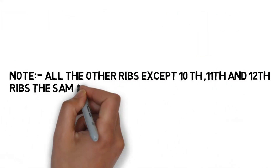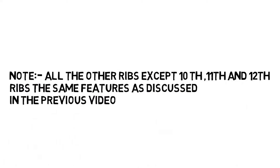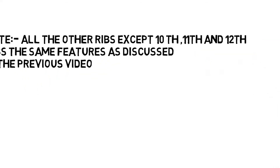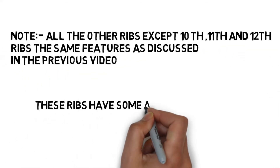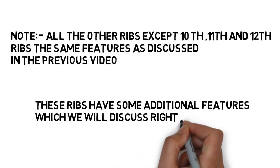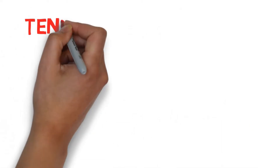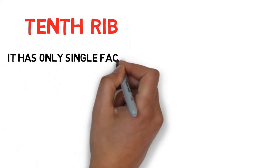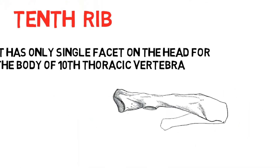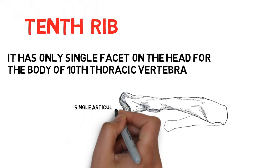All ribs except the 10th, 11th, and 12th have the same features as discussed in the previous video — link in the description. These ribs have some additional features. The 10th rib has only a single facet on the head for the body of the 10th thoracic vertebra. Here is the 10th rib, and this is the single articular facet.